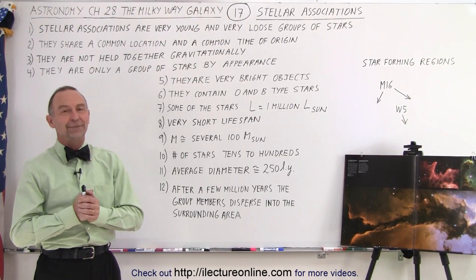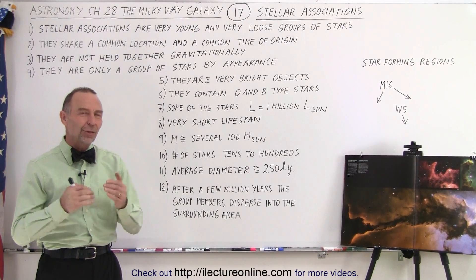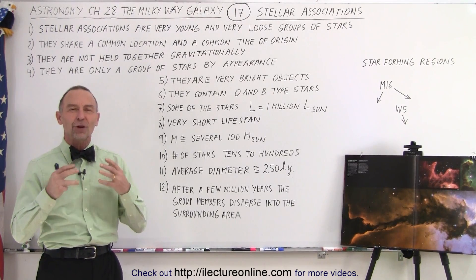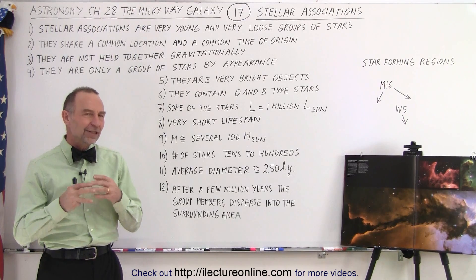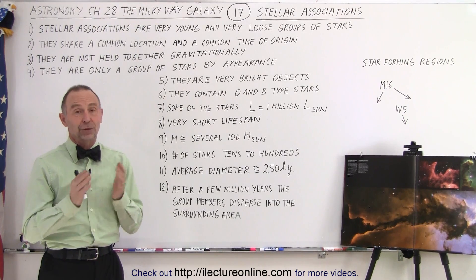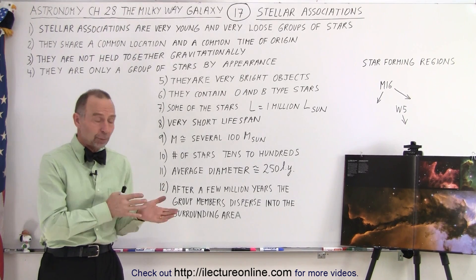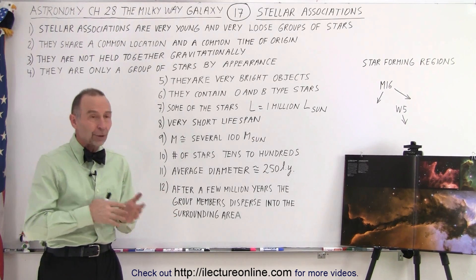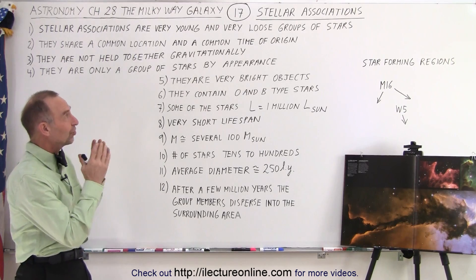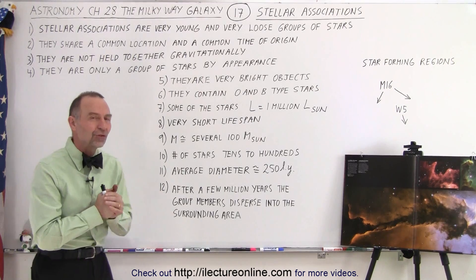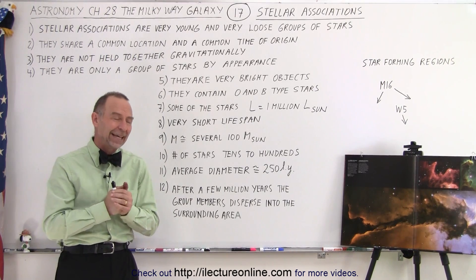Welcome to Electronline. There's a third kind of star grouping. It's very different again from the other two. We had globular clusters, we had open clusters, now we have what we call stellar associations.